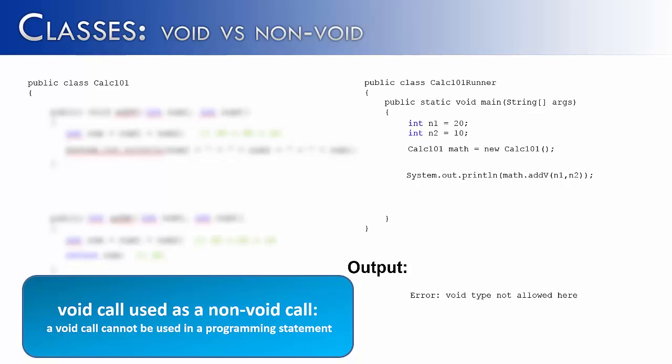Because a void call cannot be used inside of a programming statement. Void calls must always stand alone or be by themselves. So if you ever see a method inside of another programming statement, whether it be inside of an if statement, whether it be inside of a system.out.print line, or one method being assigned to a variable, you know 100% that that's a non-void method. Because if it was a void method, it would give you an error before you could do anything else.